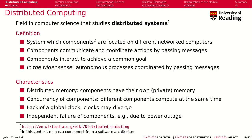The characteristics of a distributed system are that they have distributed memory — each component has its own private memory that no other component can access. It's a bit like you and a class of students: you have your own memory, your brain and thoughts, and another student has theirs. But you can communicate, and you form a kind of distributed team that works together to achieve a goal.